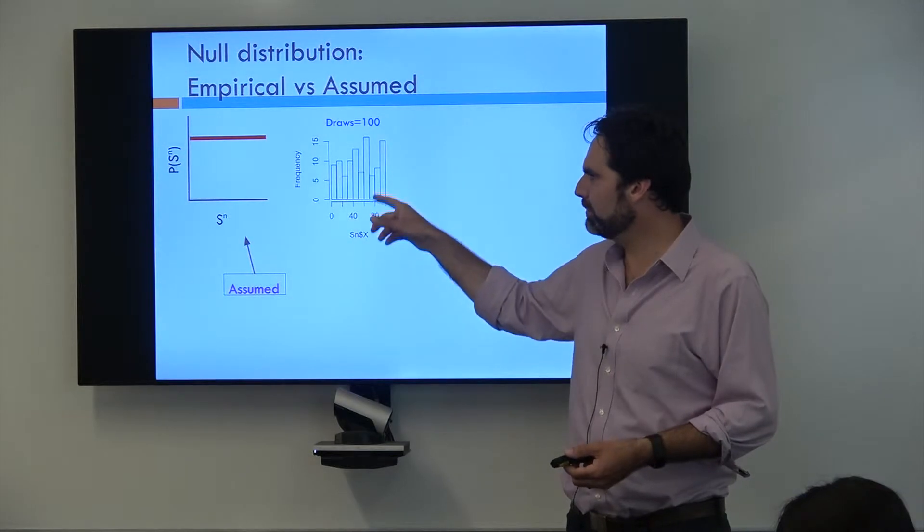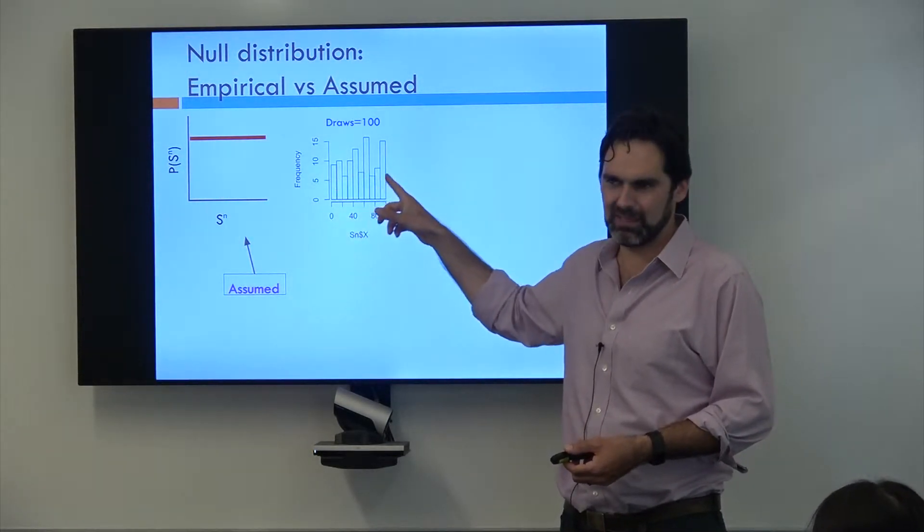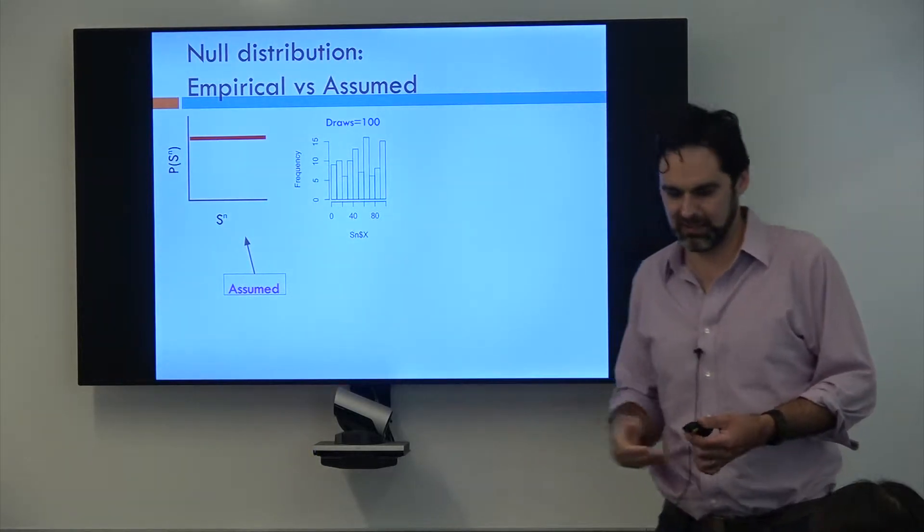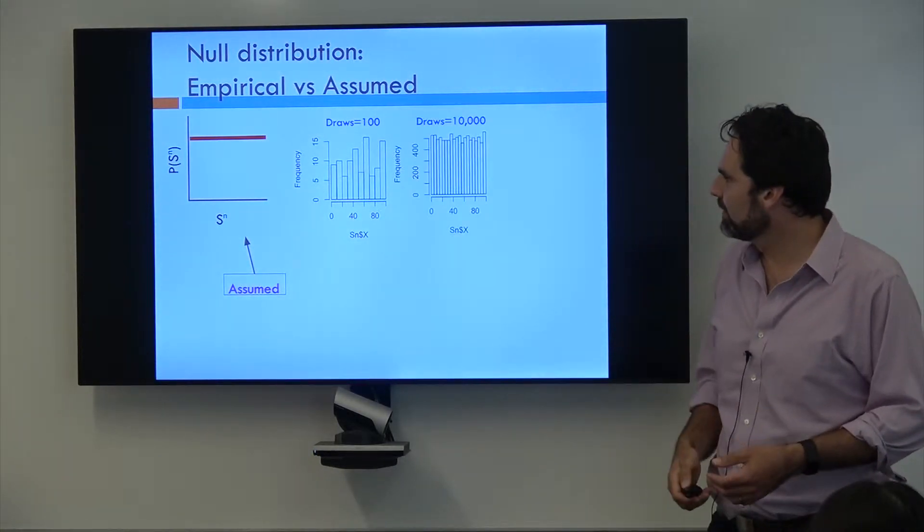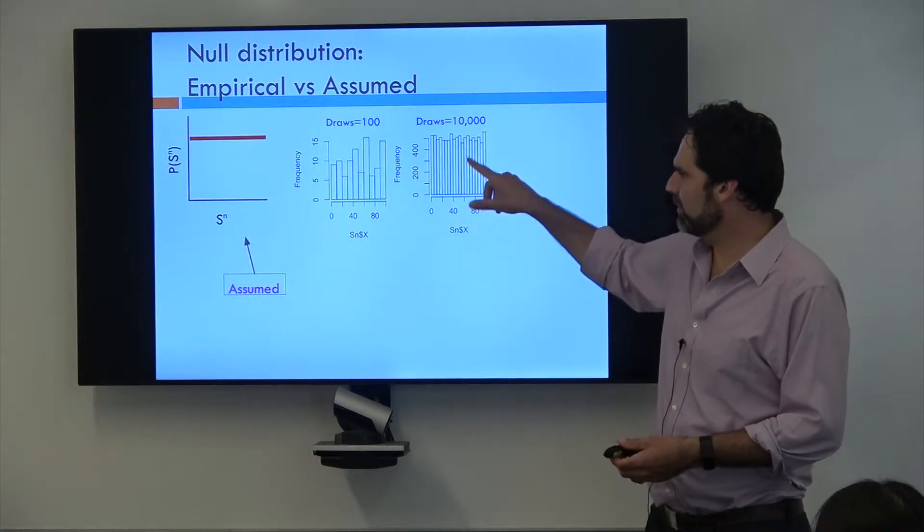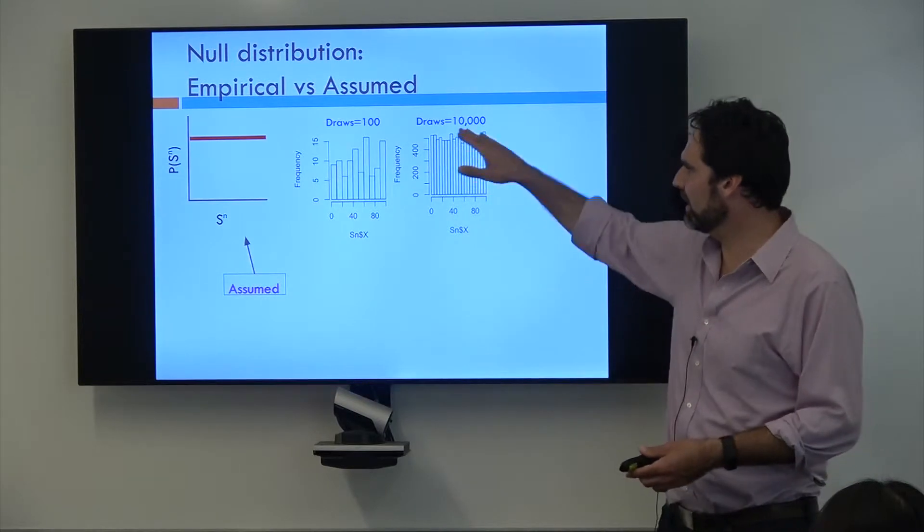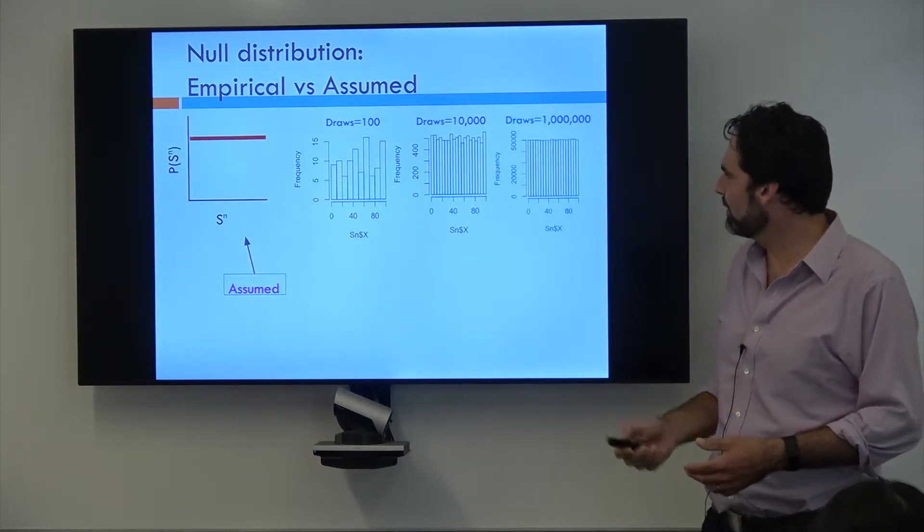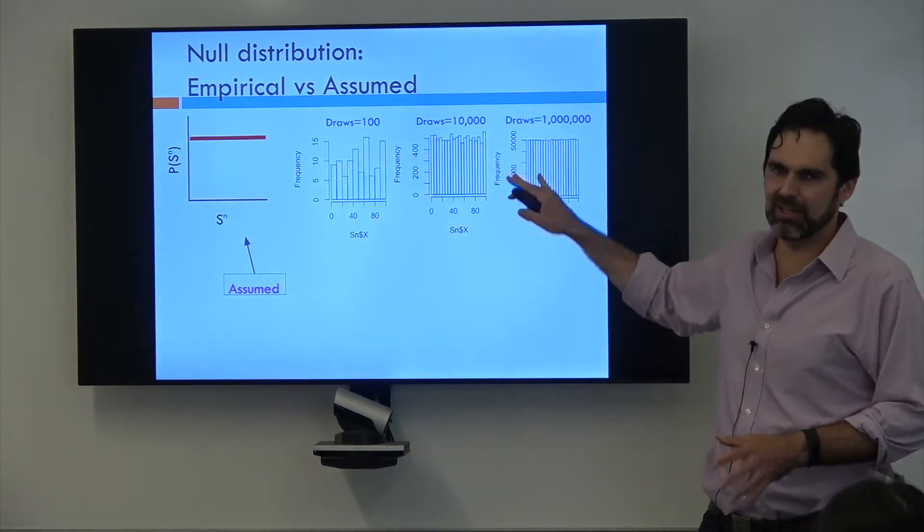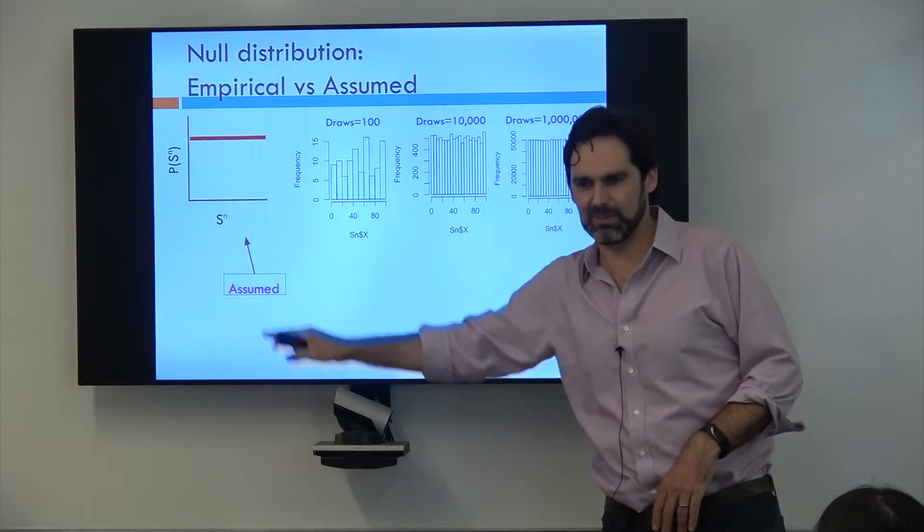If I sample 100 people under the uniform distribution then use this to calculate my p-values, my p-values might not be very accurate. Maybe I could sample 10,000 people. Now my empirical distribution is starting to look more like my uniform distribution, but it's still got some noise. We can do this all the way up to a million, and at a million I'm actually simulating what this assumed distribution is.